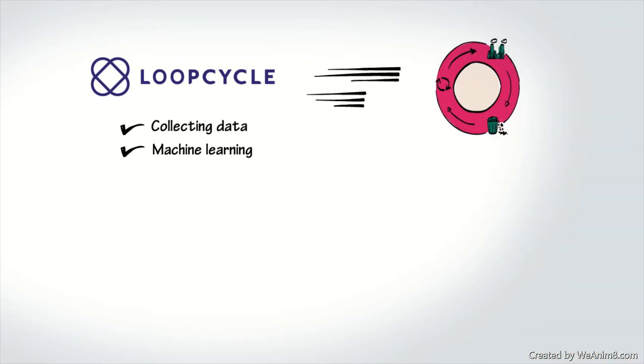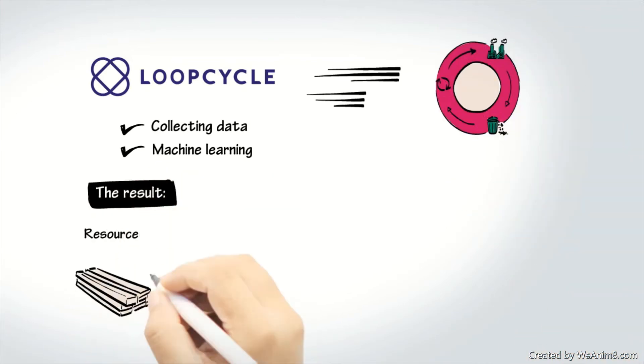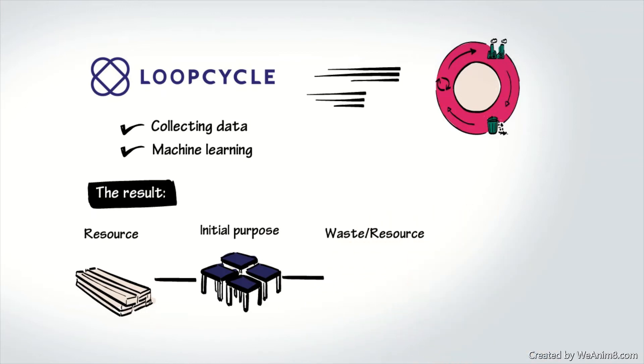Loop Cycle aims to drive the circular economy by fundamentally influencing product design and manufacture, ultimately resulting in more products being made using resources that have greater onward value beyond their initial purpose.